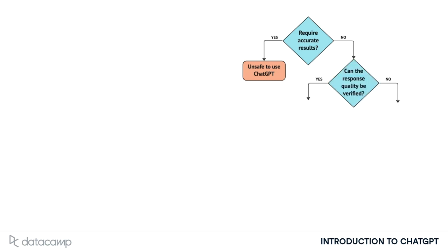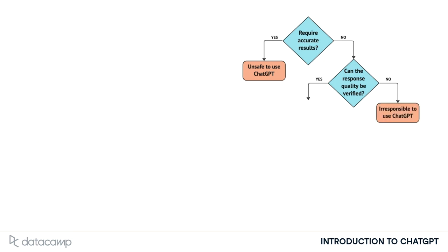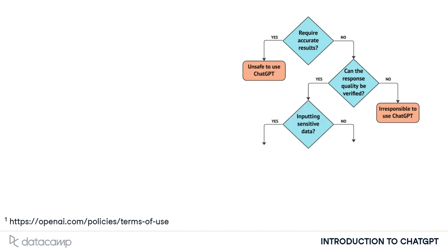Next, we should evaluate whether someone is able to verify the quality of the response. This is where subject matter expertise still plays a huge part in the workflow. A good rule of thumb is to not ask ChatGPT to do something that we couldn't do ourselves given enough time. If we can't verify the correctness or quality of the result, it would be irresponsible to begin using it to drive decisions or servicing it to customers.